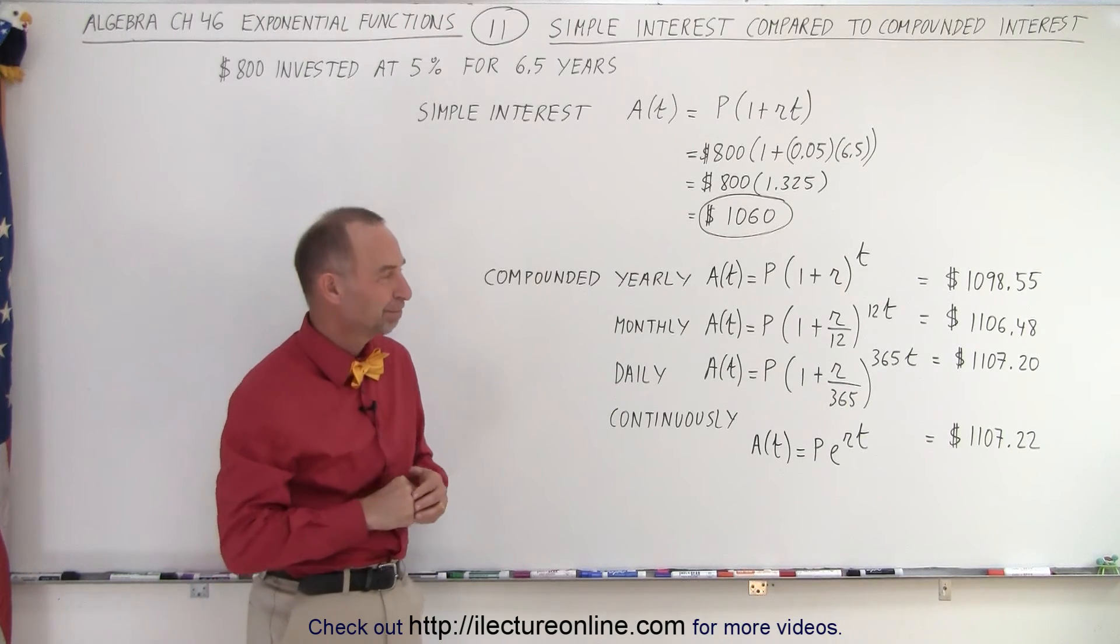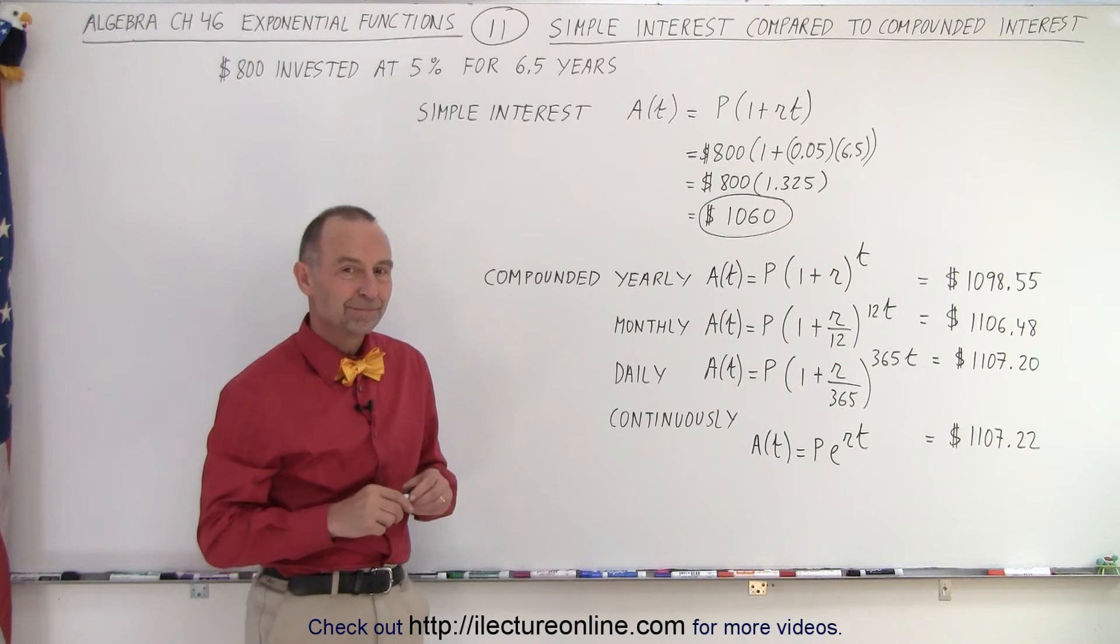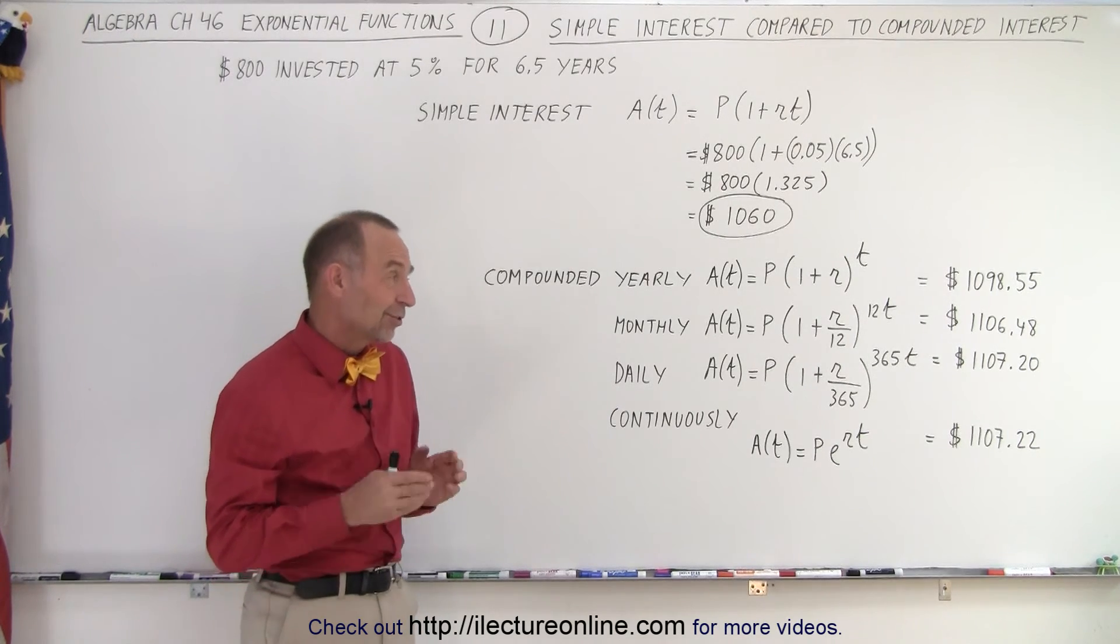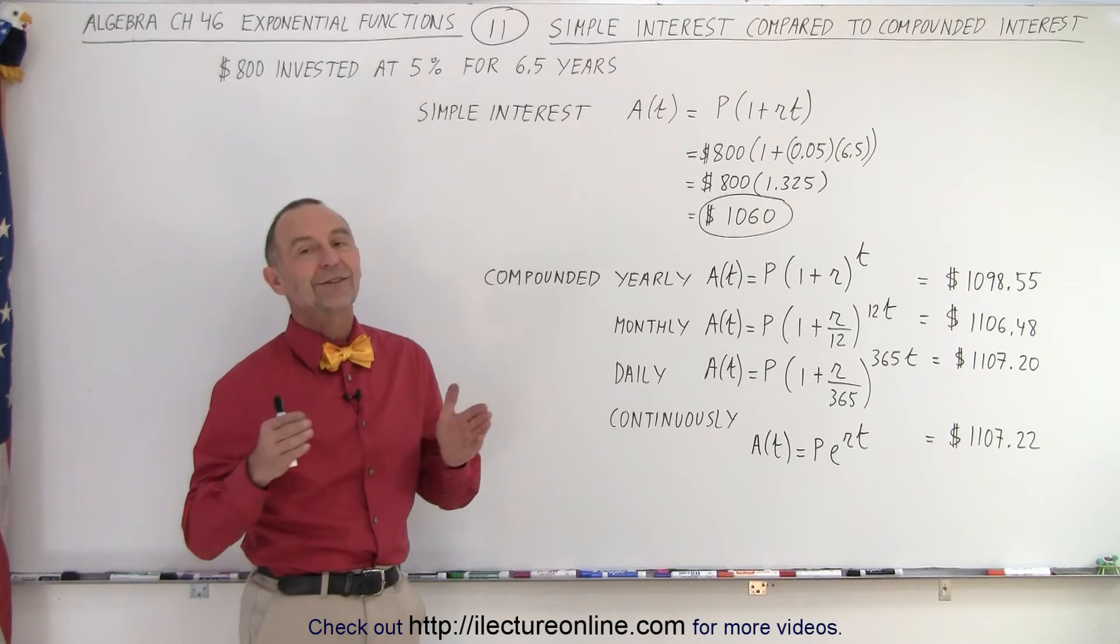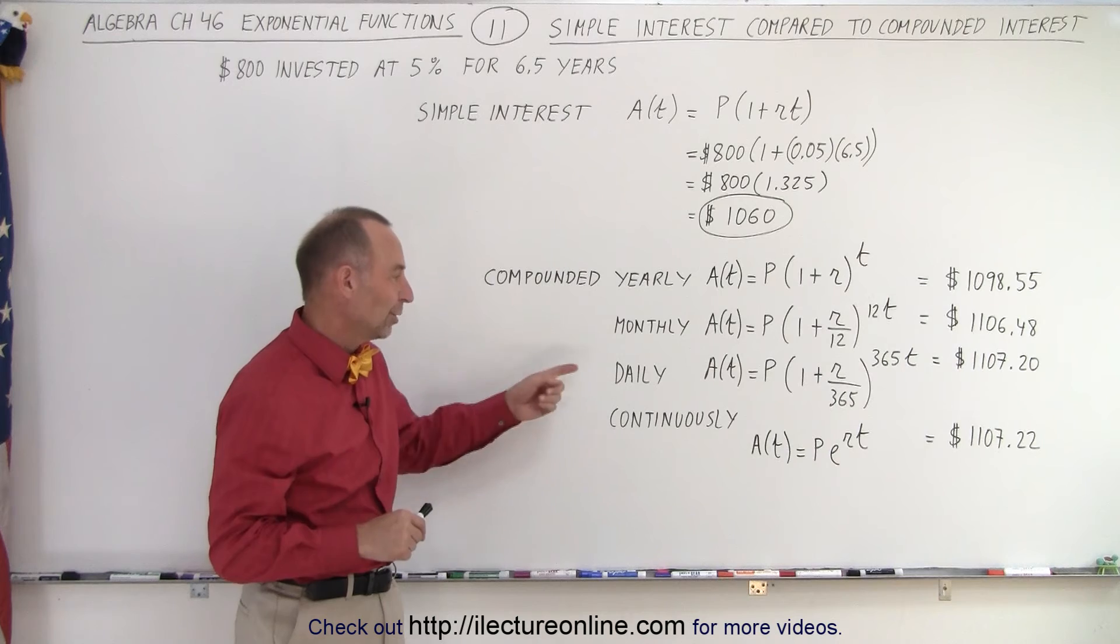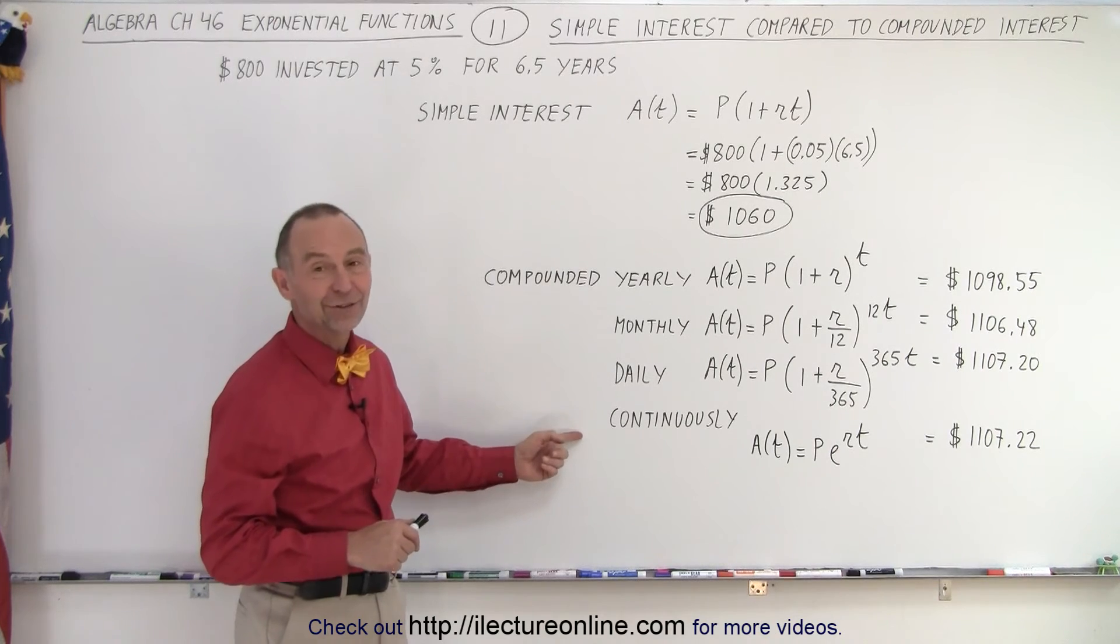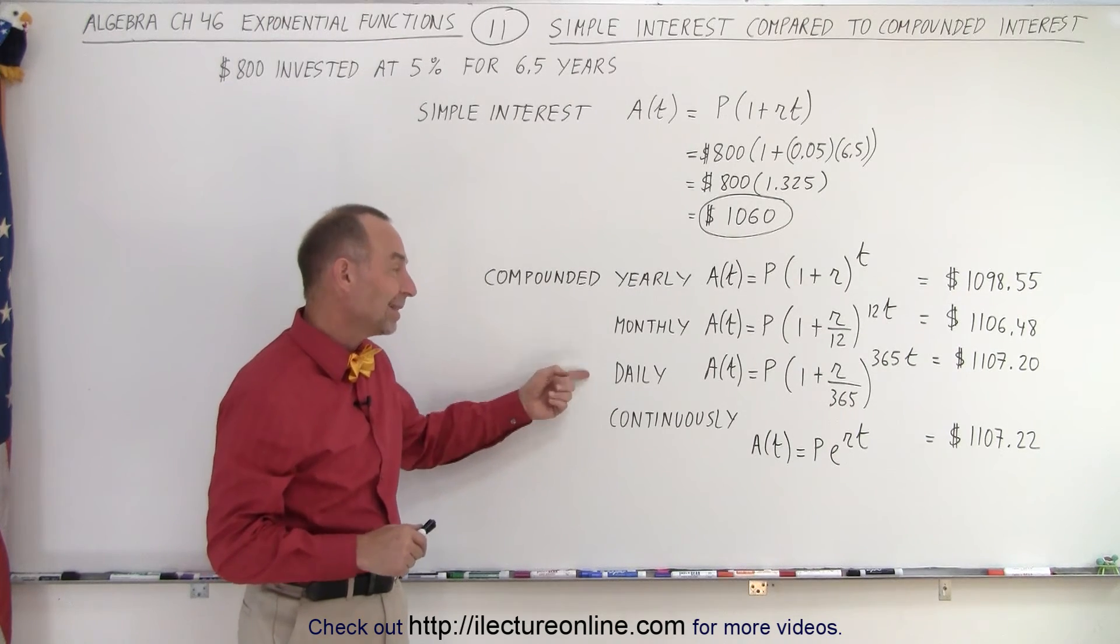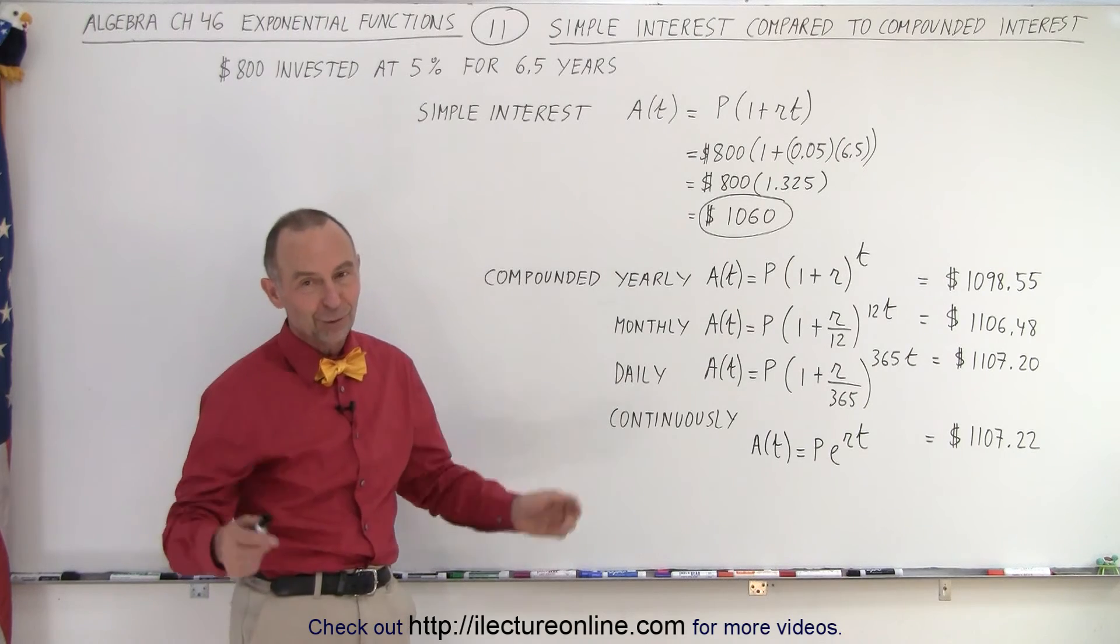What if they invested for 35 years instead? For 35 years, yes, you will get a greater divergence in the amount of money you earn. Definitely, there will not be a lot of difference between daily and continuous, but between monthly and daily, there will be some measurable difference.